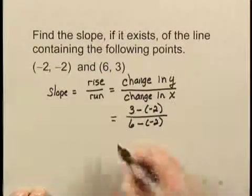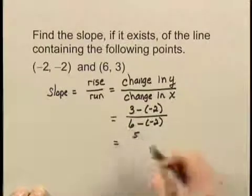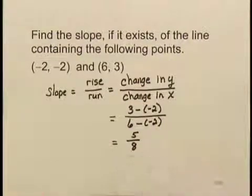3 minus -2 is 5. 6 minus -2 is 8. So the slope of this line is 5/8.